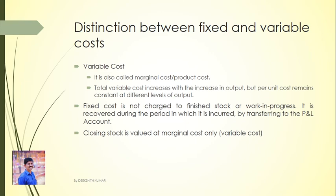Next is Variable Cost, also called Marginal Cost. Total variable cost increases with the increase in output. But the variable cost per unit of production remains constant at different levels of output.